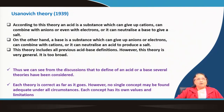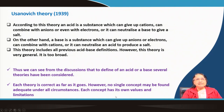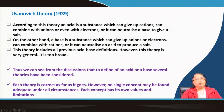The last and most general theory is the Usanovich theory. According to this theory, an acid is a substance which can give up cations or combine with anions or electrons, or neutralize a base to produce a salt. A base is a substance which can give up anions or electrons, combine with cations, or neutralize an acid to produce a salt. This theory includes all previous acid-base definitions, but it is too general.